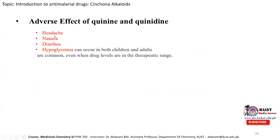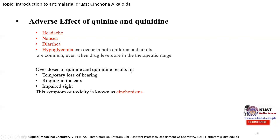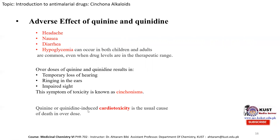Adverse side effects: common side effects include headache, nausea, diarrhea, and hypoglycemia, occurring in both children and adults at therapeutic drug levels. Overdose of quinine and quinidine results in temporary loss of hearing, ringing in the ears, and impaired vision — a syndrome known as cinchonism. The most dangerous side effect is that both quinine and quinidine induce cardiotoxicity, which is the main cause of death in overdose.